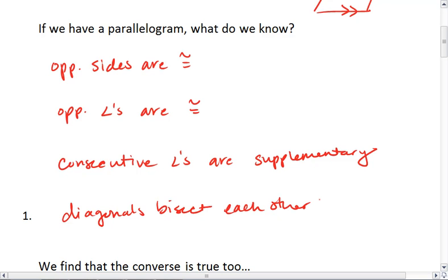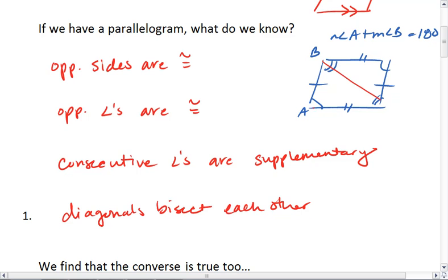Okay, so just a quick rundown. We know if we have a parallelogram that opposite sides are congruent, that opposite angles are congruent, and that our two diagonals will bisect each other.